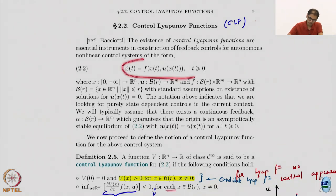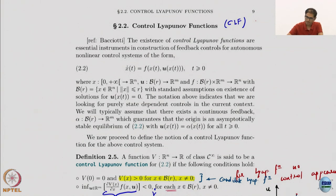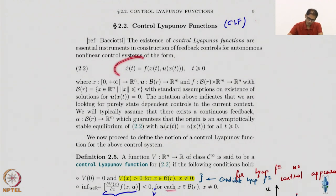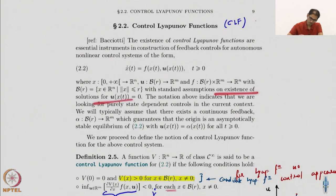We are usually looking at systems of this form. I would write it as x-dot equals f(x, u). The key thing worth noting is that the control is a pure function of the state — time does not explicitly appear. So control u is purely a function of state and not of time explicitly. The states are in R^n, control in R^m, and the vector field is defined accordingly.